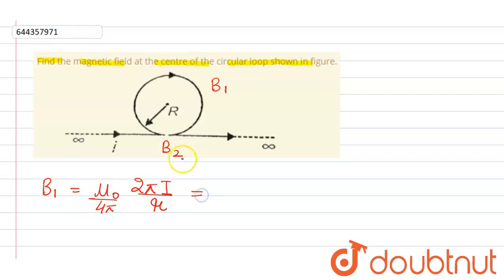Now we apply this formula in our question. We get μ₀/(4π) × 2πi/R, and since the direction of current is clockwise, the magnetic field will be inward represented by cross.